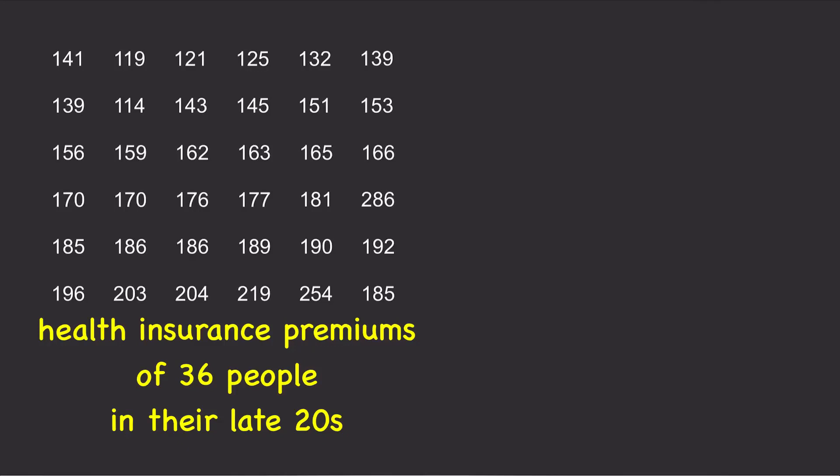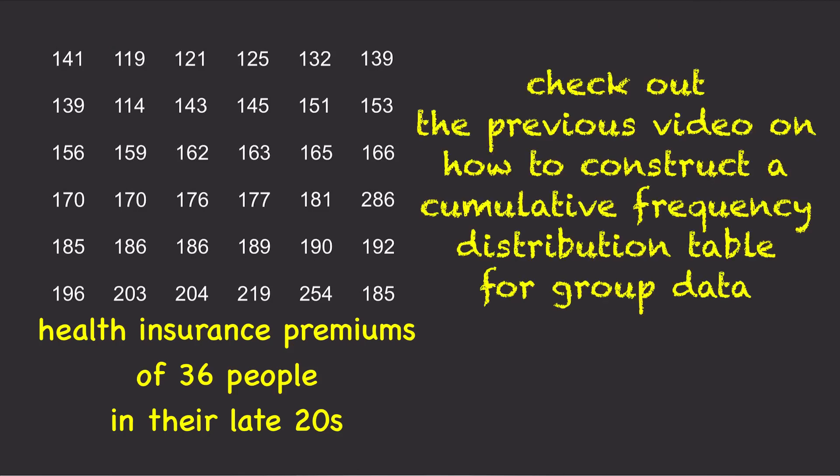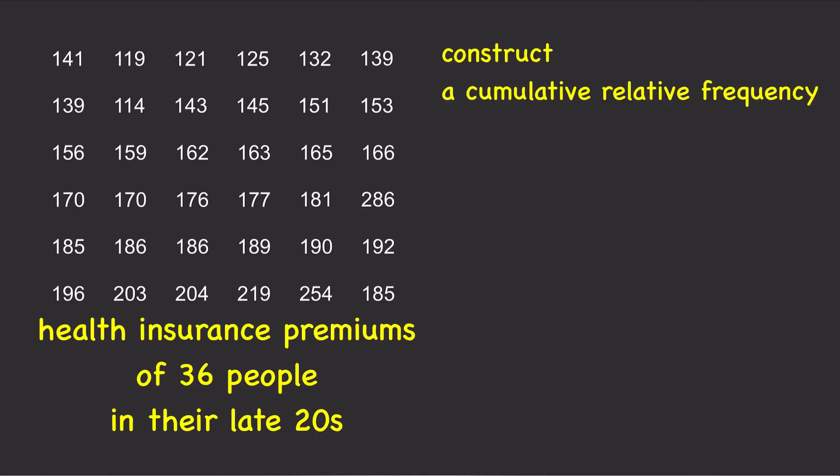This dataset contains the health insurance premiums for 36 people who were in their late 20s in 2014. You can check out the previous video on how to construct a cumulative frequency distribution table for group data. We're going to construct a cumulative relative frequency polygon.